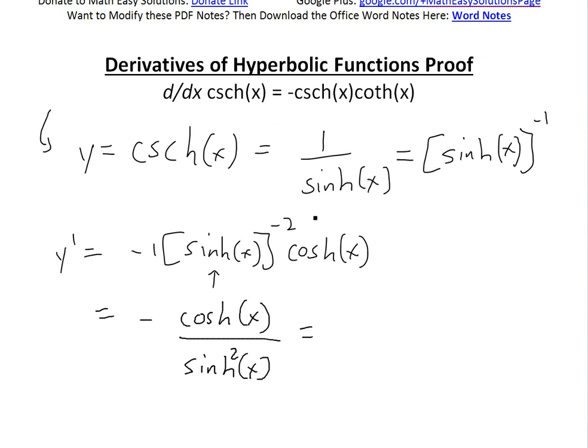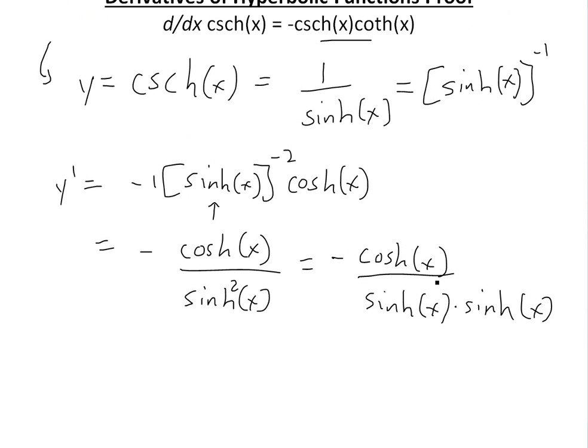To make it look like the answer, we could simplify it further. This will be negative cosh of x divided by sinh of x squared, which is the same thing as sinh of x multiplied by sinh of x. If we look at cosh of x divided by sinh of x, these two equal cotangent of x.